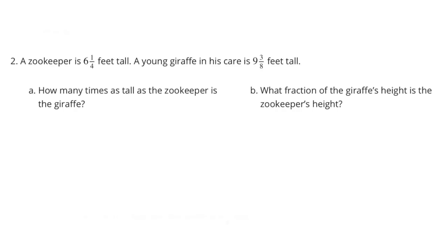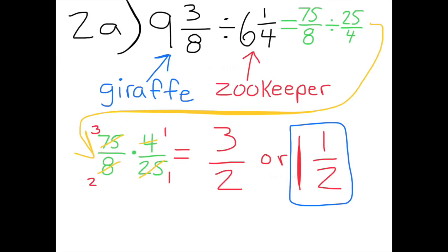Number two: a zookeeper is six and one-fourth feet tall. A young giraffe in his care is nine and three-eighths feet tall. Part a: how many times as tall as the zookeeper is the giraffe? Nine and three-eighths represents the height of the giraffe divided by six and one-fourth, which represents the height of the zookeeper.